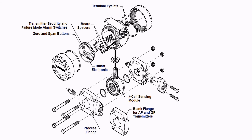Next to the transmitter we have security and failure mode alarm switches, and zero and span buttons. This is the basic smart electronics — this is the PCB board where you have the microprocessor and base elements. This is where it converts the displacement into the electrical output signal.